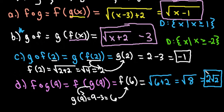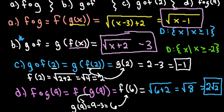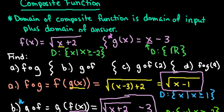To recap: when finding a composite function, take whatever the second value is and plug it into the first one. You can either find it with numbers or leave it in terms of x if you are looking for just an equation or a function. Thanks for watching — if you have any questions or additional topics you need me to cover, please let me know, and if you get a chance, please subscribe.